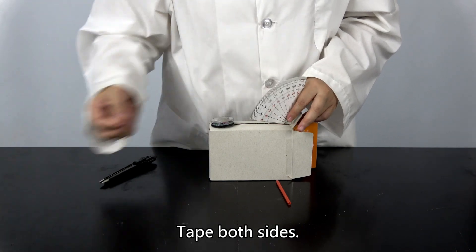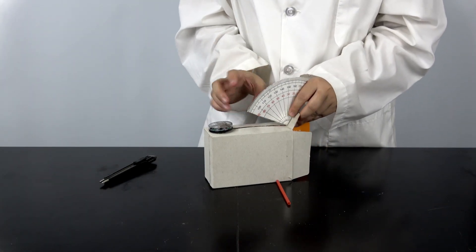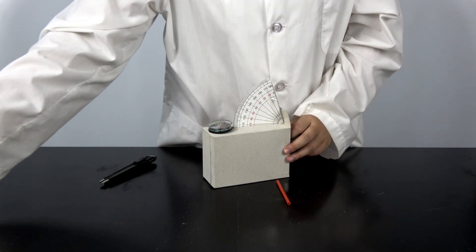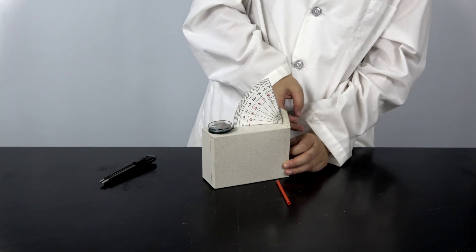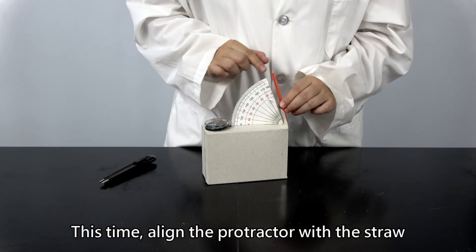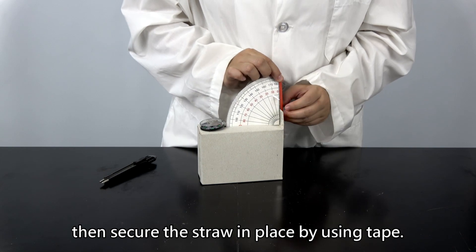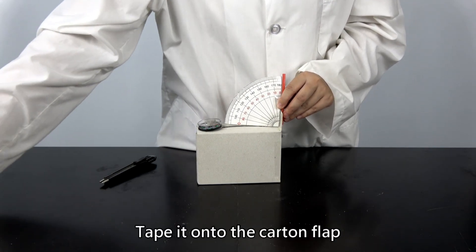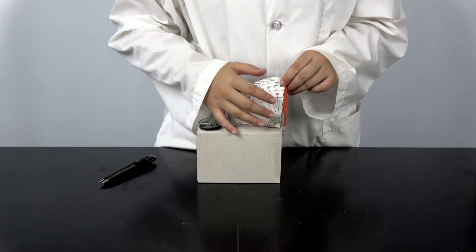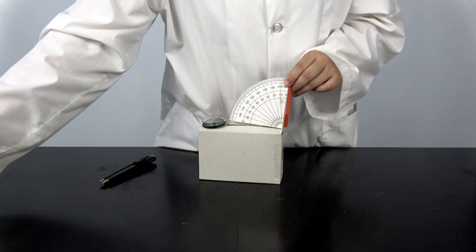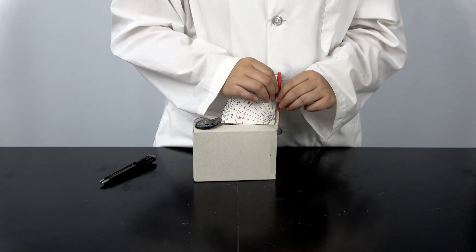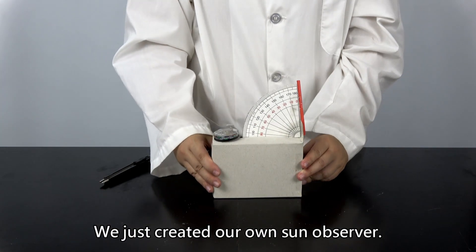Tape both sides. This time, align the protractor with the straw. Then secure the straw in place by using tape. Tape it onto the carton flap and onto the protractor. We just created our own sun observer.